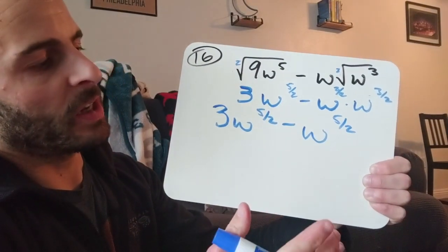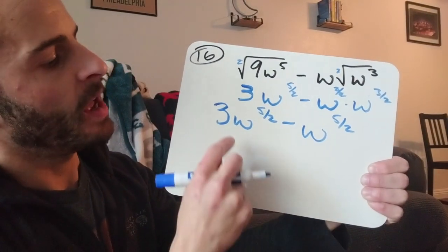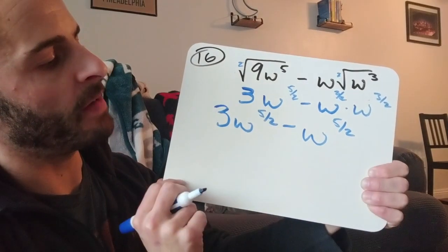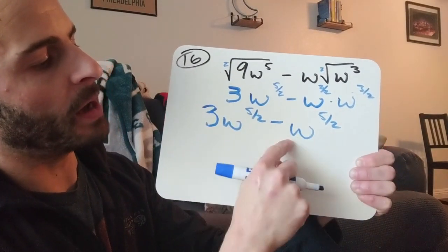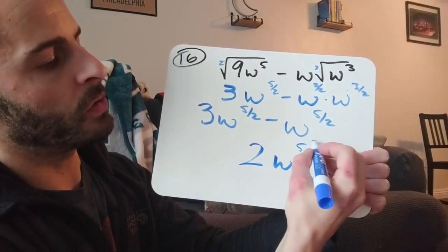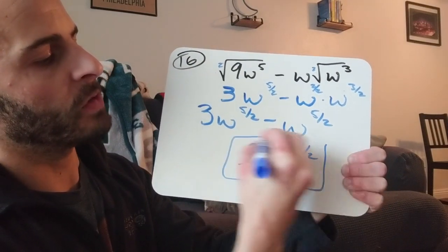Think of it just like 3x minus x. I have 3 w's to the 5 halves. Take away 1 w to the 5 halves. Well, 3 of them minus 1 of them, I'm going to be left over with 2 w's to the 5 halves, and that's my answer.